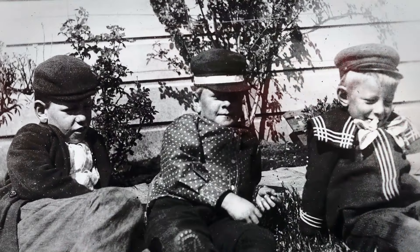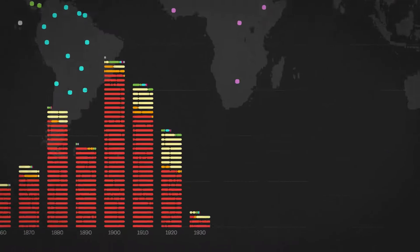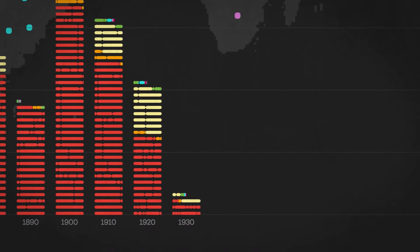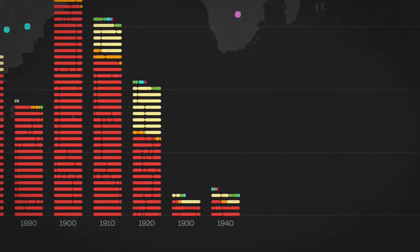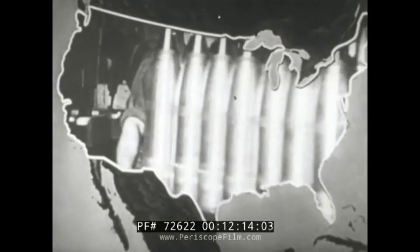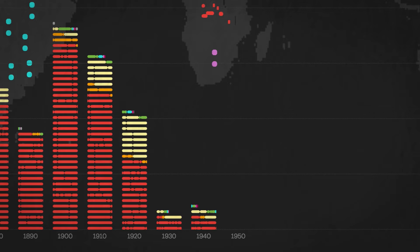Then the Great Depression happened — all immigration plummeted. Then World War II happened. The U.S. refused to increase immigration caps for 20,000 Jewish children fleeing Nazi rule. It also stopped naturalization proceedings for Italians, Germans, and Japanese.